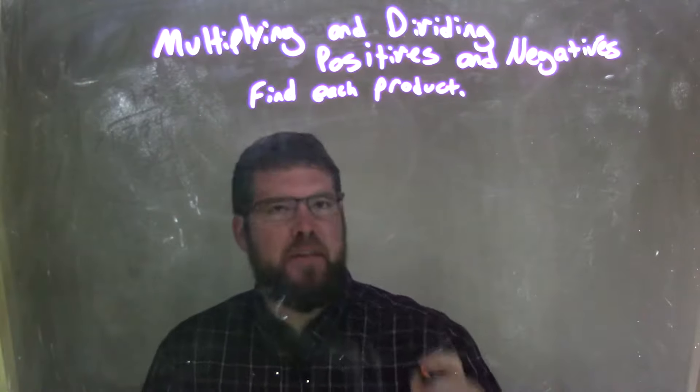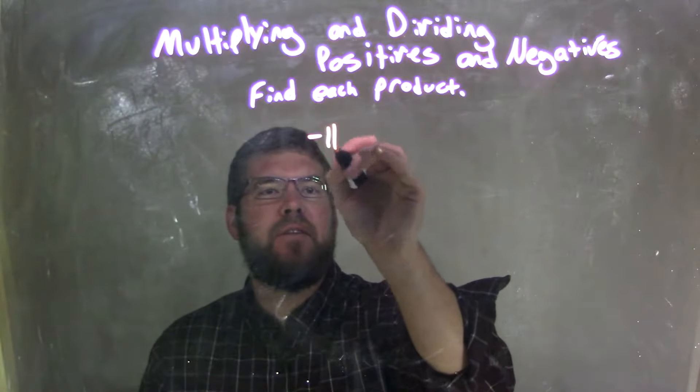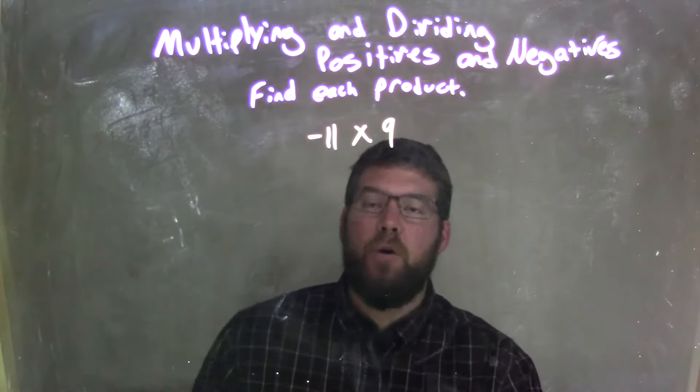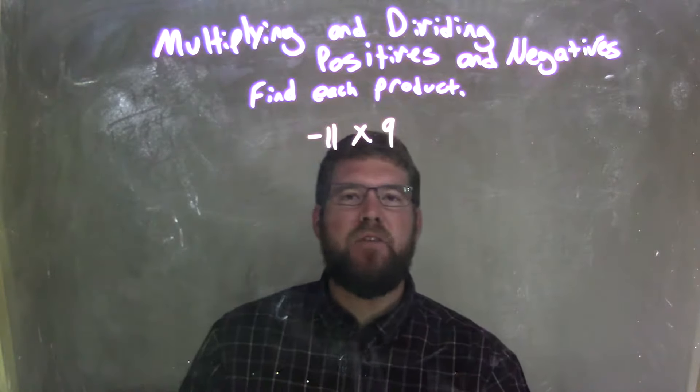So if I was given this product, negative 11 times 9, and I want to solve or simplify here, negative 11 times 9...